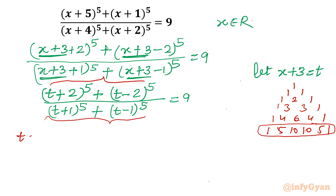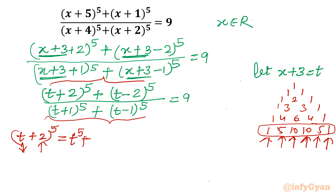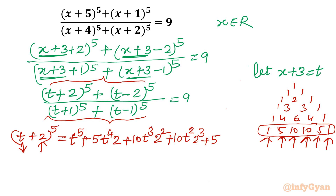Let me write out one term first. The first power decreases and the second power increases. So (t+2)^5 expands as: t^5 + 5t^4·2 + 10t^3·2^2 + 10t^2·2^3 + 5t·2^4 + 2^5, which gives t^5 + 5t^4·2 + 10t^3·4 + 10t^2·8 + 5t·16 + 32.